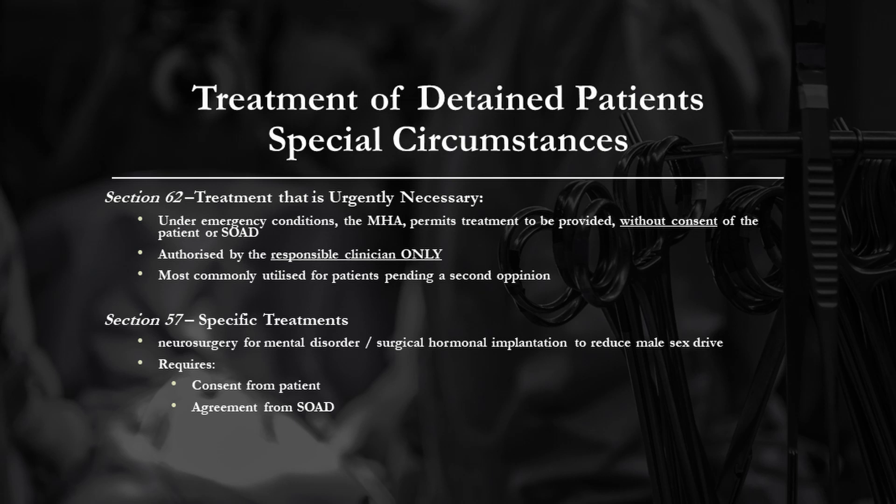In rare circumstances, patients may require neurosurgical treatment or hormonal treatments for the management of complex conditions. Where such treatment is proposed, under Section 57 of the Mental Health Act, the patient is required to provide consent and the treatment should be supported by a second opinion.